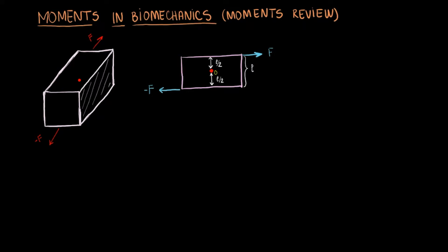If the height of the box is L, then an origin point in the center of the box would be L divided by 2 away from the top or bottom faces of the box.